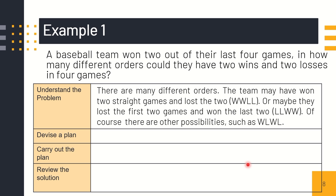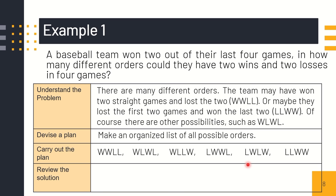There are many different orders. The team may have won two straight games and lost two, like win-win, loss-loss. Or maybe they lost the first two games and won the last two, like loss-loss, win-win. Of course, there are other possibilities such as win-loss, win-loss. We need to devise a plan. What strategy or appropriate strategy can we use in this kind of problem? We can use an organized list. We can list the possible orders.